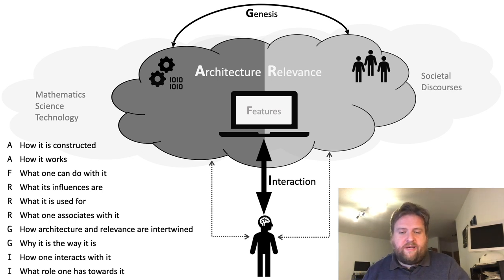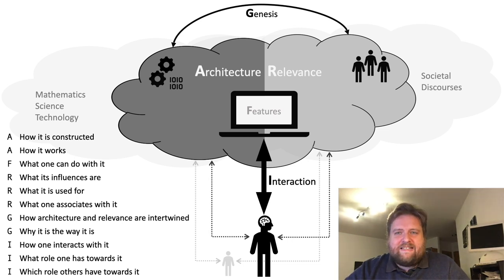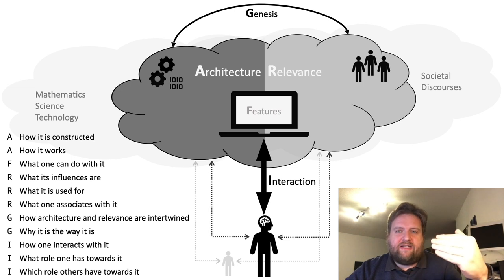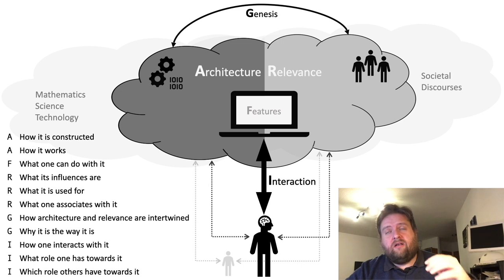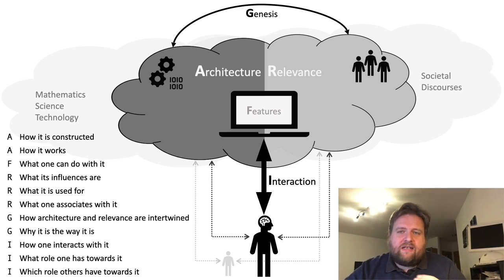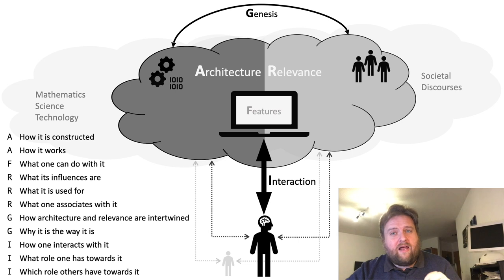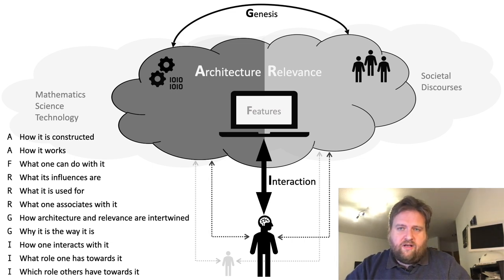There is one more thing to add: another human being. There is not only one human being interacting with the digital artifact — there are several. It makes sense to put yourself in the perspective of someone else and consider what their interaction with the artifact is, and what that means in terms of their knowledge about architecture and relevance. This leads to something we could call empathy — thinking about what someone else has in mind when using an artifact helps me understand that person and relate it to my own perspective. That would be the complete picture of the Ariadne Principle.